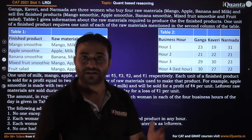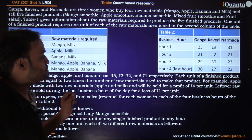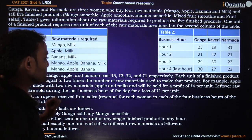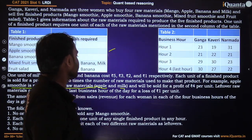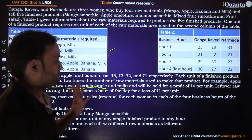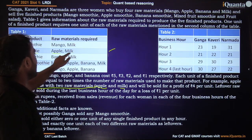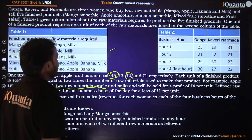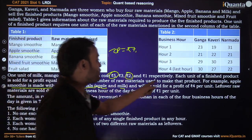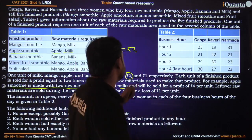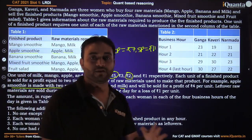From this we can find the cost price for each finished product. Each unit of a finished product is sold for a profit equal to two times the number of raw materials used. For example, apple smoothie uses two raw materials — apple and milk — so it is sold for a profit of four rupees. Cost price is two plus five equals seven rupees, and selling price is seven plus four equals eleven rupees. We can similarly find cost price and selling price for each finished product.